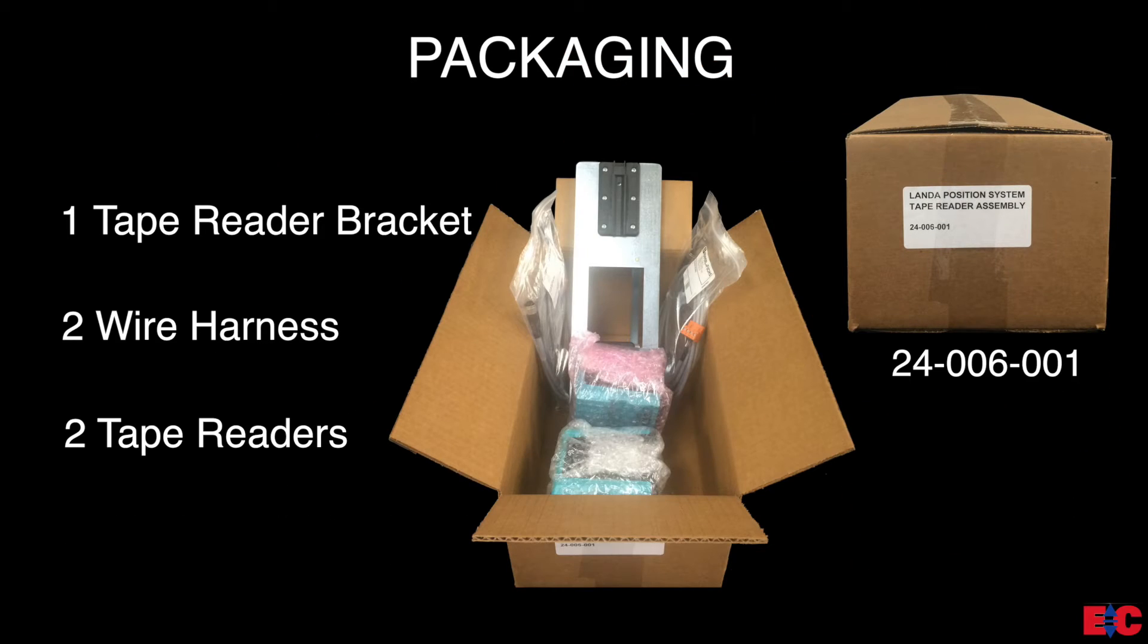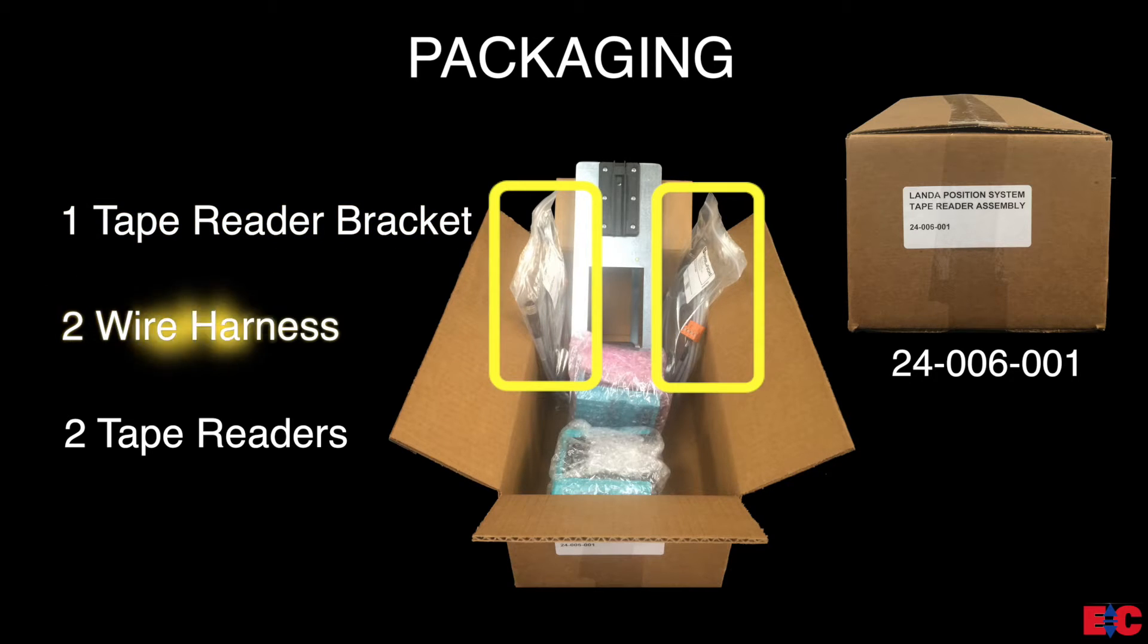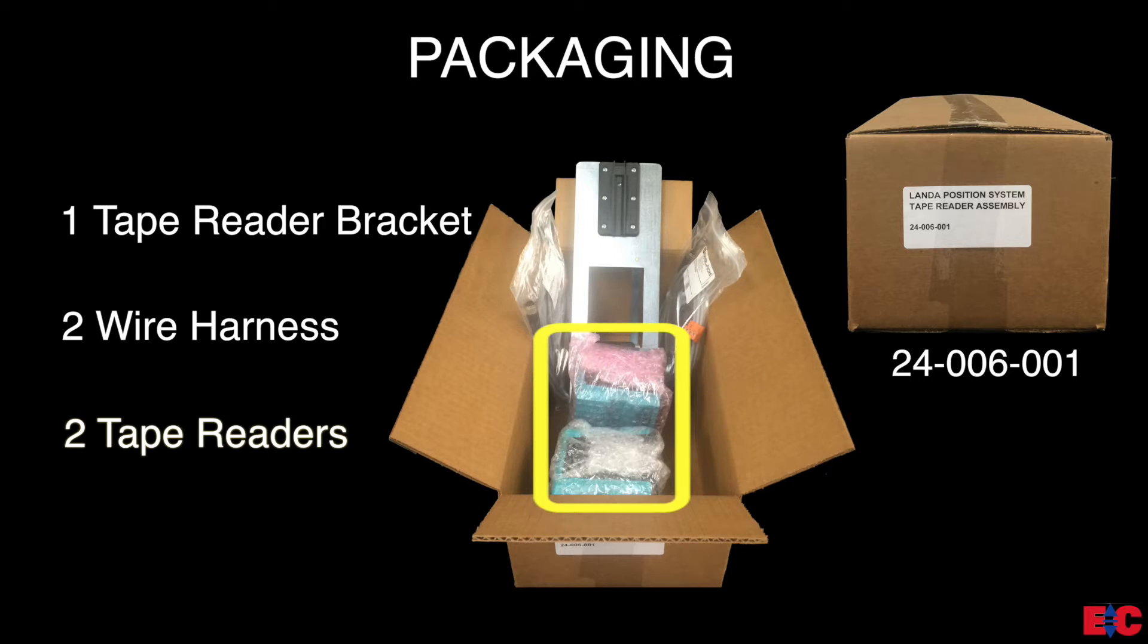The first box is labeled 24-006-001, which contains one tape reader bracket for both the Lambda tape readers, two wire harnesses that will run from each Lambda tape reader to the Pixel TOC board, and two Lambda tape readers.